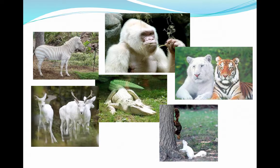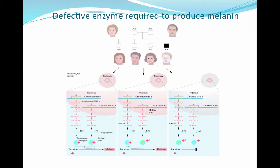The albinism gene is not unique to humans — we also see it in many other species. We've got white zebras, chimpanzees, tigers, squirrels, and apparently even albino alligators.